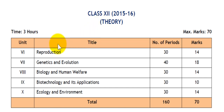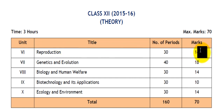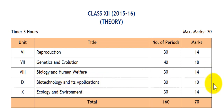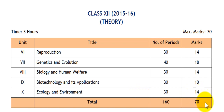Here you can see the units are given. Unit 6, i.e. reproduction, carries 14 marks. Genetics and evolution will be of 18 marks. Biology and human welfare will carry 14 marks. Biotechnology and its applications will be of 10 marks, and ecology and environment will carry another 14 marks, totalling to 70 marks in all.